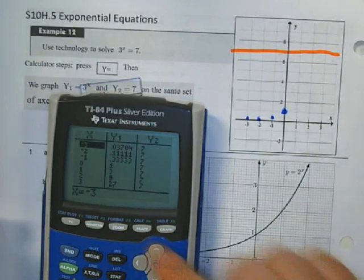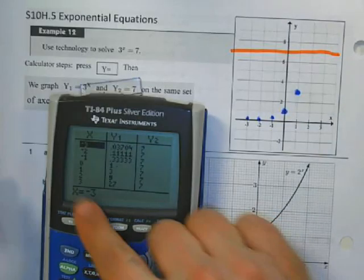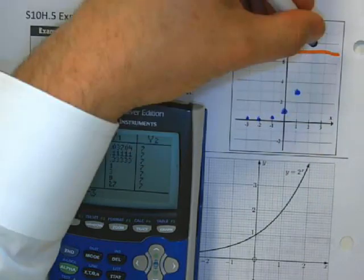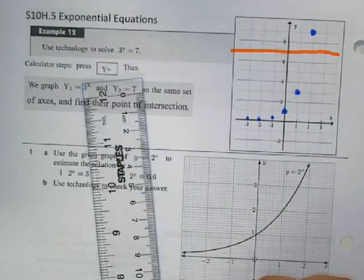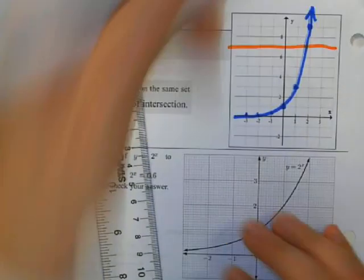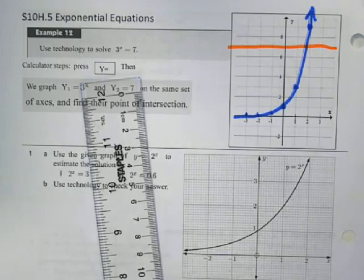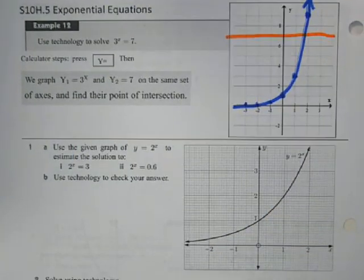When x is at 1, we're at 3. When x is at 2, we're at 9, and then it keeps going up. So my graph looks something like this. So now to find out where these intersect, we need a few calculator tips.